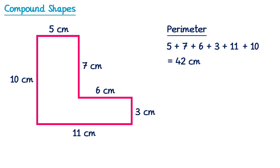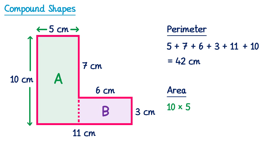You may also be asked to work out the area of a compound shape. To do this you're going to need to split it into its two original shapes, so I'm going to split it with a dotted line like this. Now we have two rectangles — rectangle A and rectangle B. The height of rectangle A is 10 centimeters and the width is 5 centimeters, so to find its area we multiply 10 and 5, which is 50 centimeters squared.